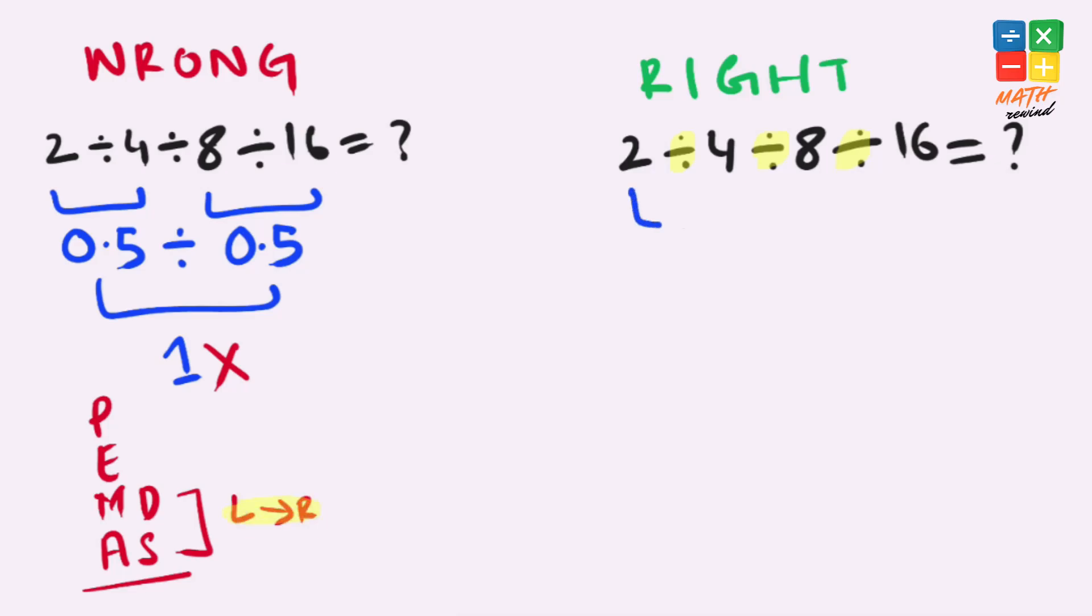So let's start solving from the left side. 2 divided by 4 we can write as 1 over 2, as they cancel out each other, so 1 over 2 divide by 8 divided by 16.